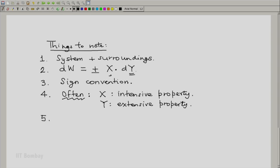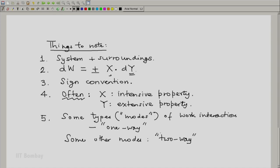And the fifth point to note is that some types, what we call modes of work interaction, are one way. We will look at the illustrations again to understand what we mean by this. Some other modes are two way. Let us go back to our illustration and look at these points again.